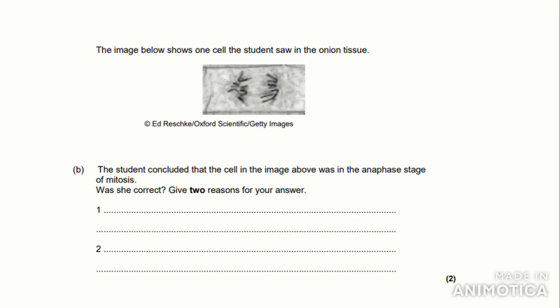The image below shows one cell the student saw in the onion tissue. The student concluded that the cell in the image was in the anaphase stage of mitosis. Was she correct? Give two reasons for your answer. Now as this is a give question, you don't really need to write in much detail to get the marks. So if we recall from a few minutes ago, anaphase is when the chromosomes or the chromatids even are pulled to opposite poles of the cell. So we can put here that yes, it is anaphase because the chromosomes are at opposite poles of the cell or are being pulled to opposite poles of the cell, as you can see by the image.